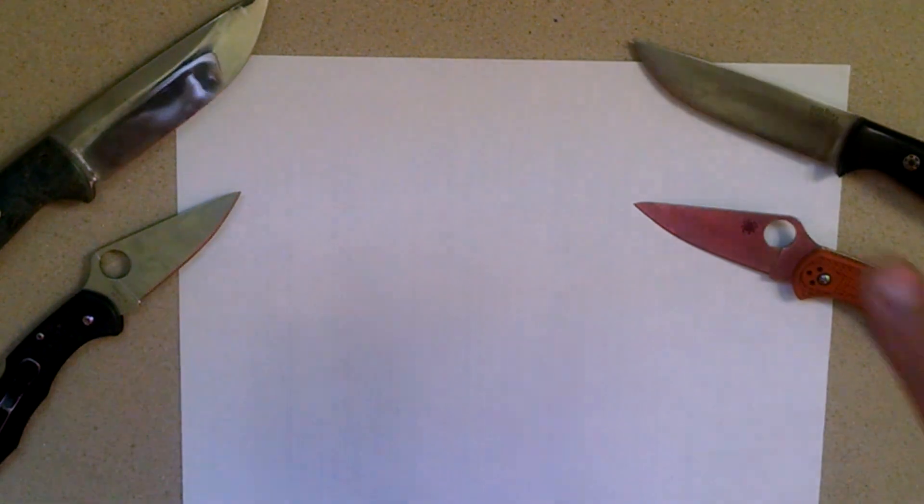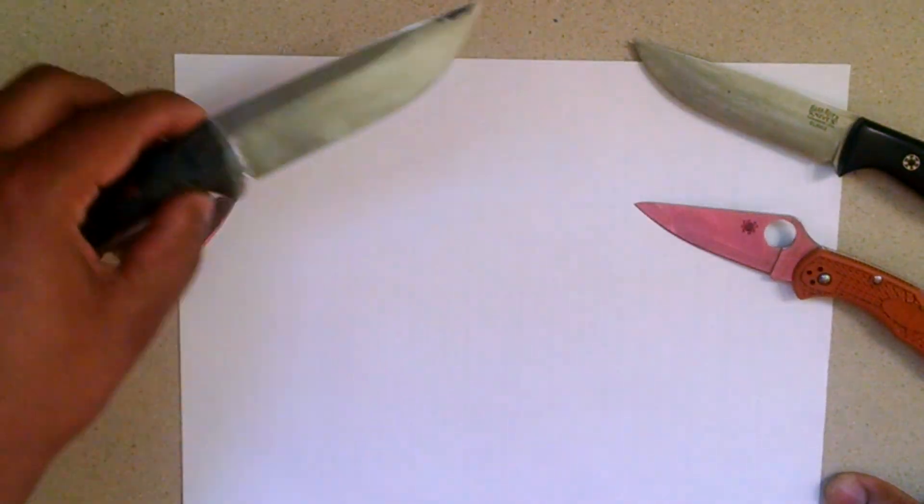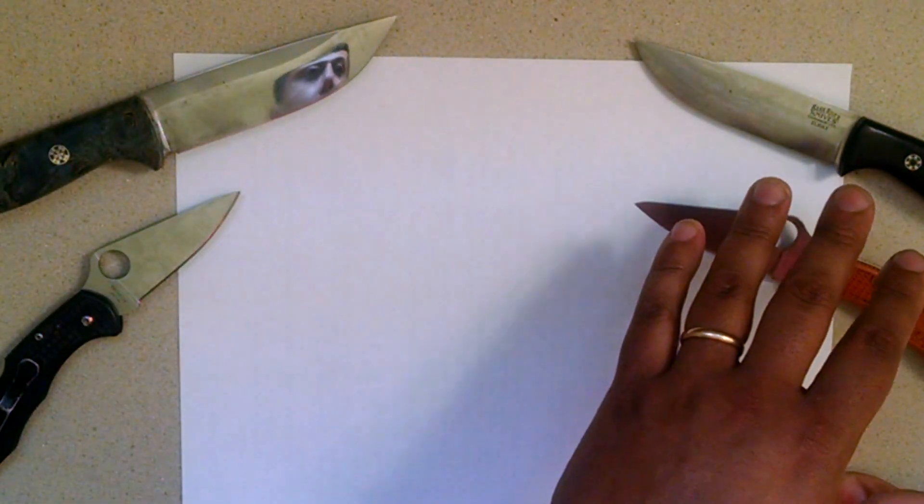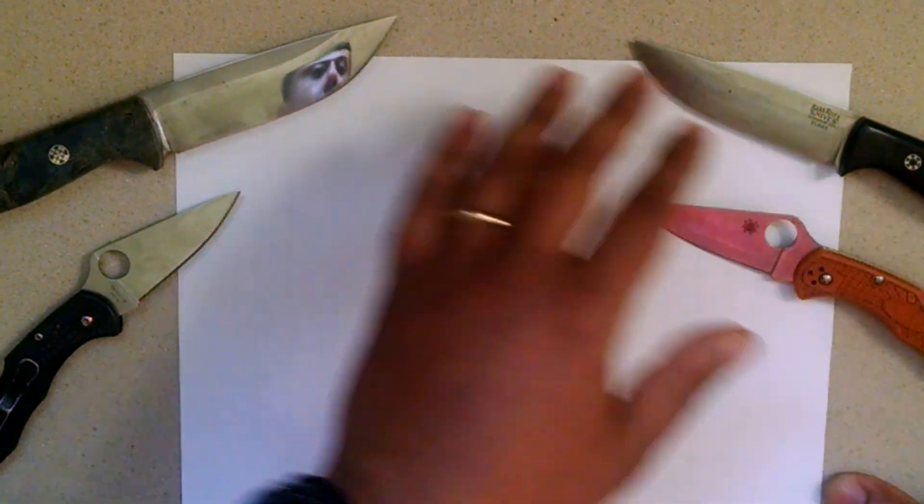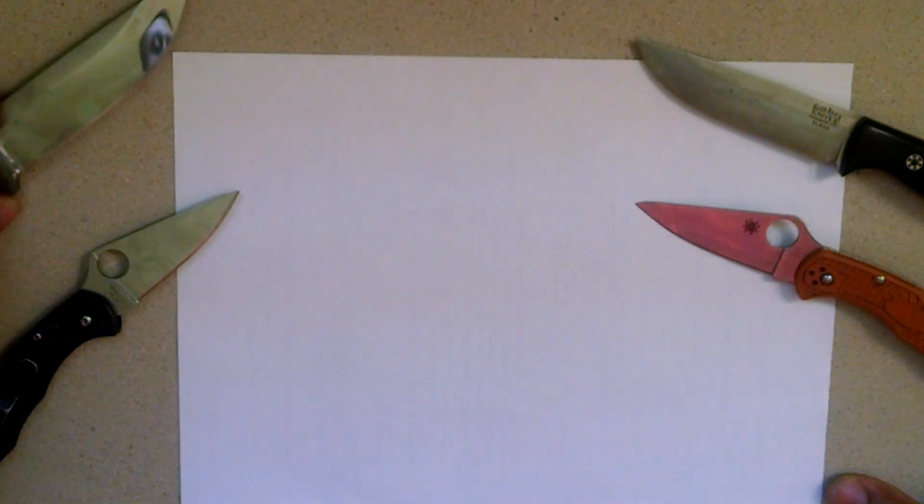They're just able to pack these knives with tons of alloying and stuff that is just not possible in these normal ingot steels. Because what would happen if you didn't powder the steel is that you would just get a ton of clumping. You would just get huge clumps.